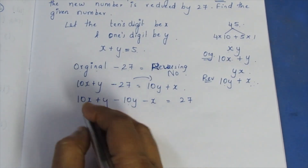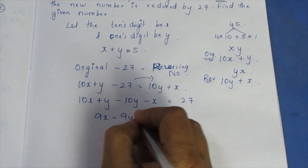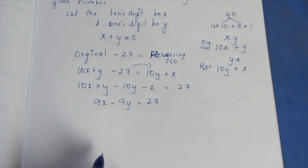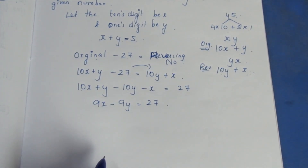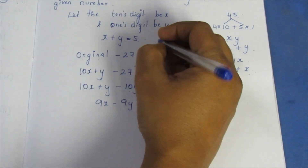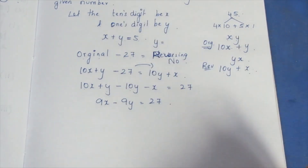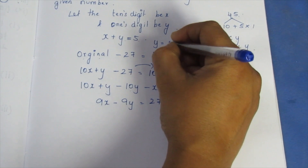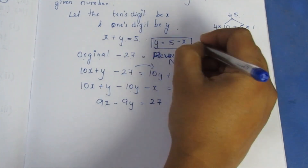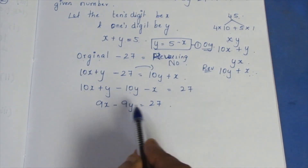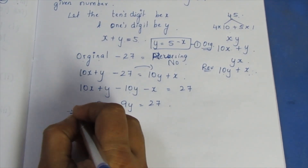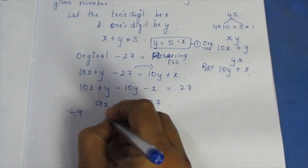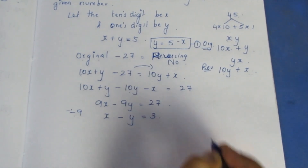Rearranging: 10x + y − 10y − x = 27, which simplifies to 9x − 9y = 27. Dividing both sides by 9, we get x − y = 3. This is our second equation.